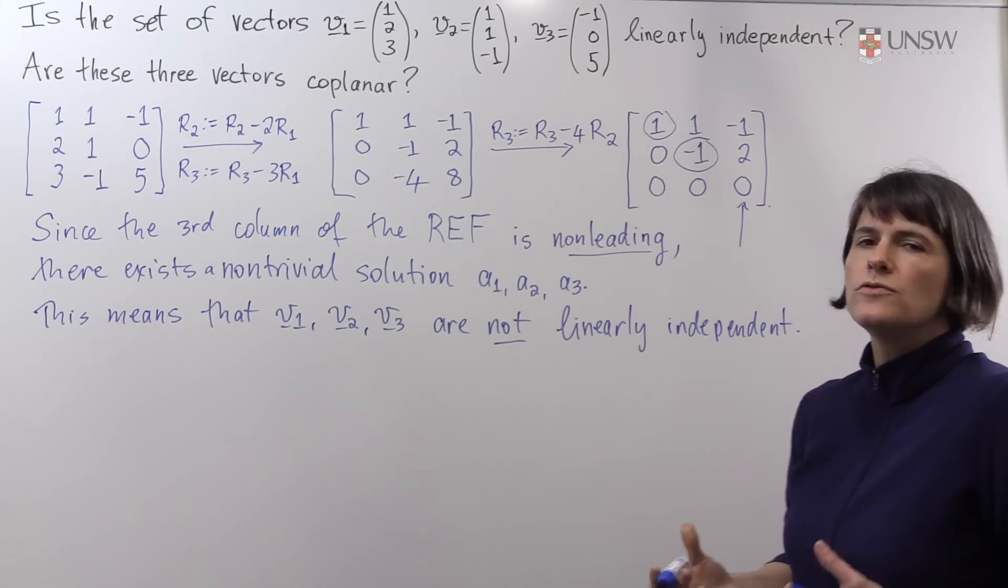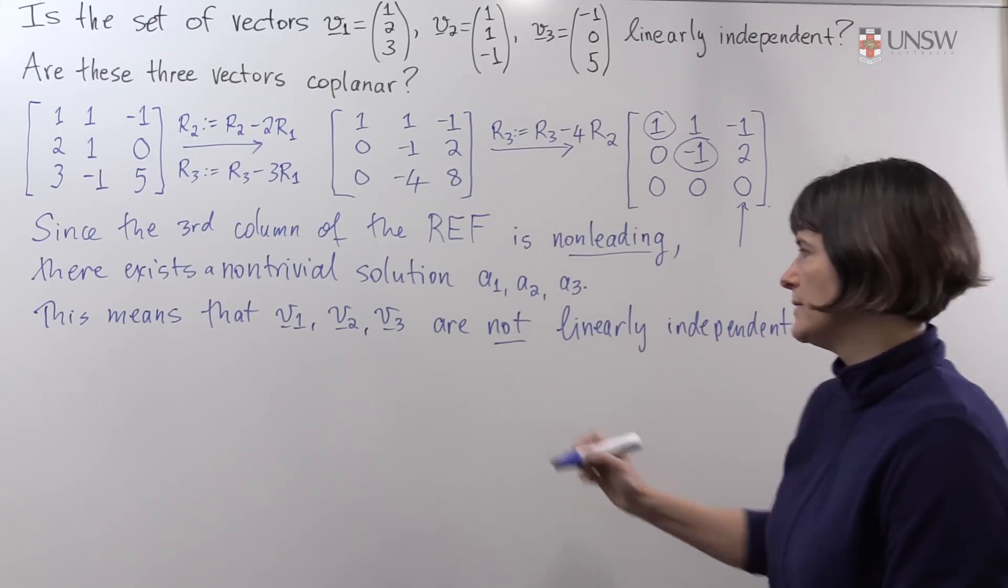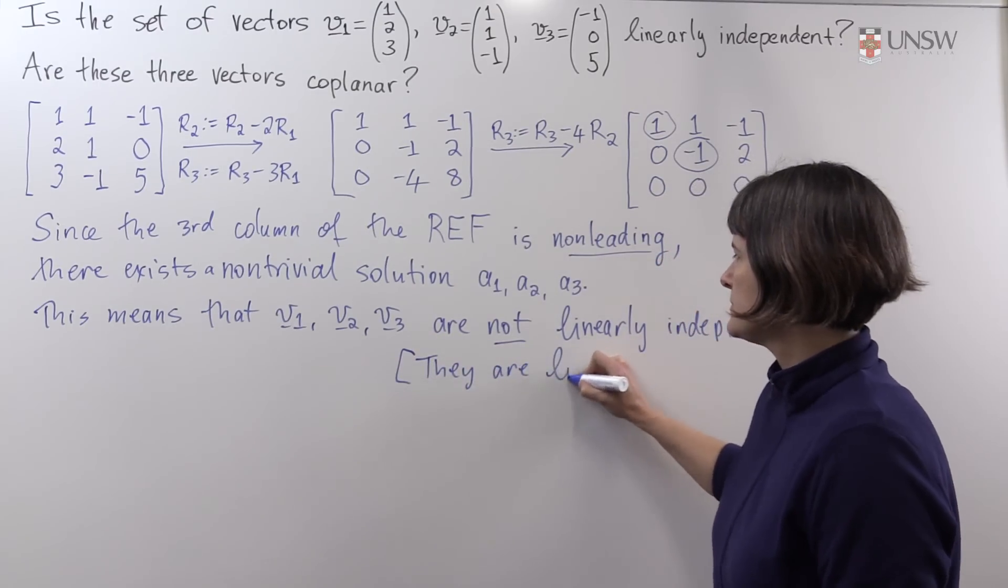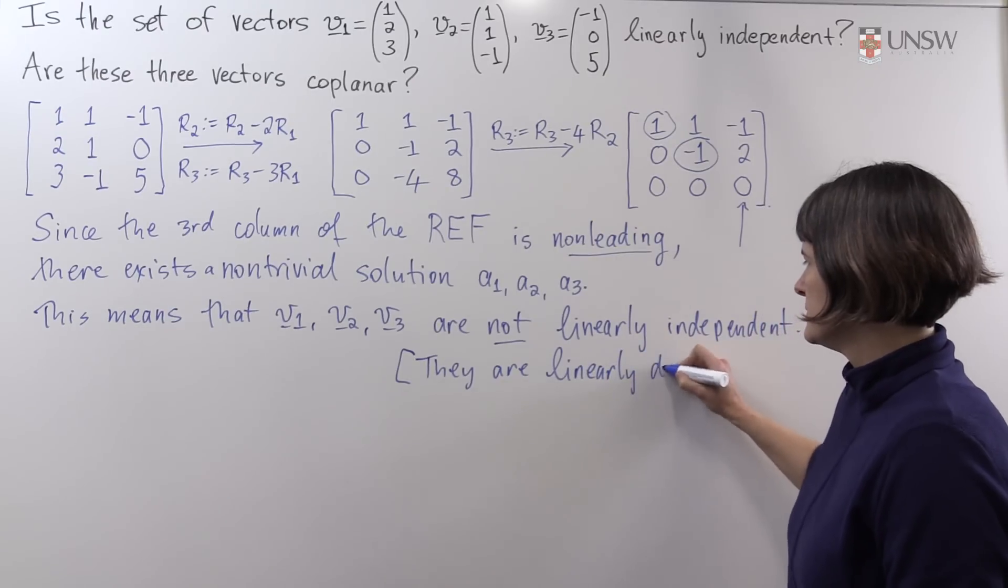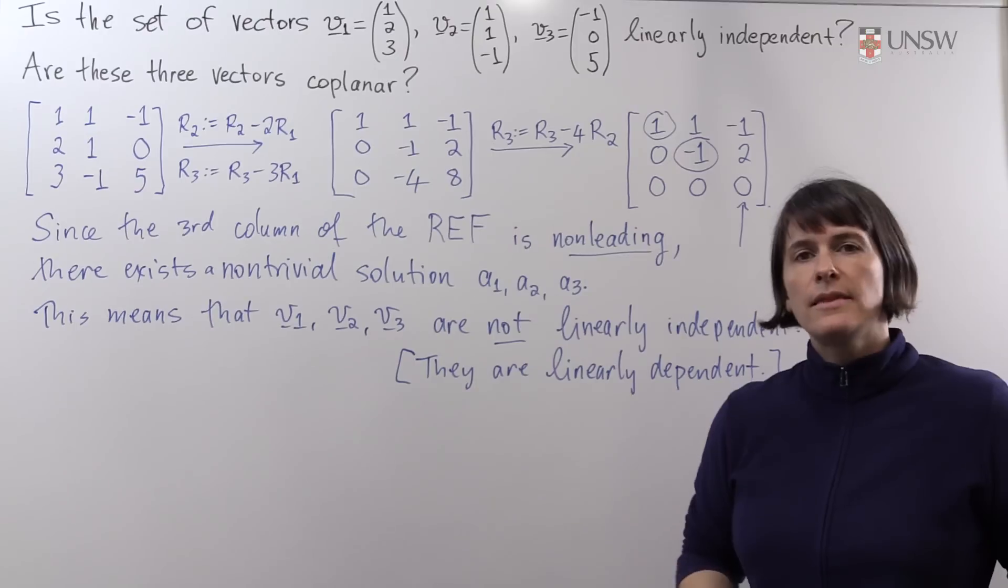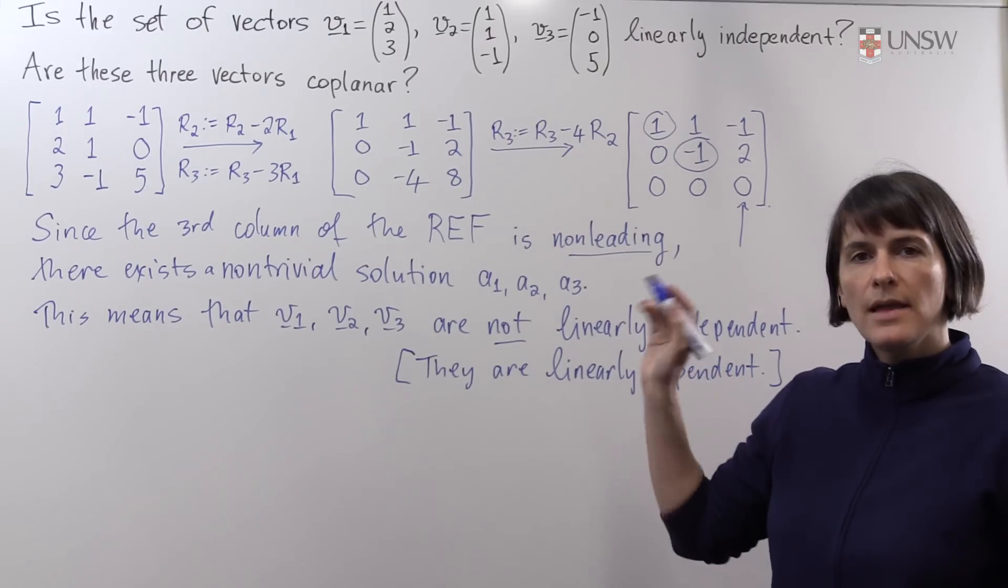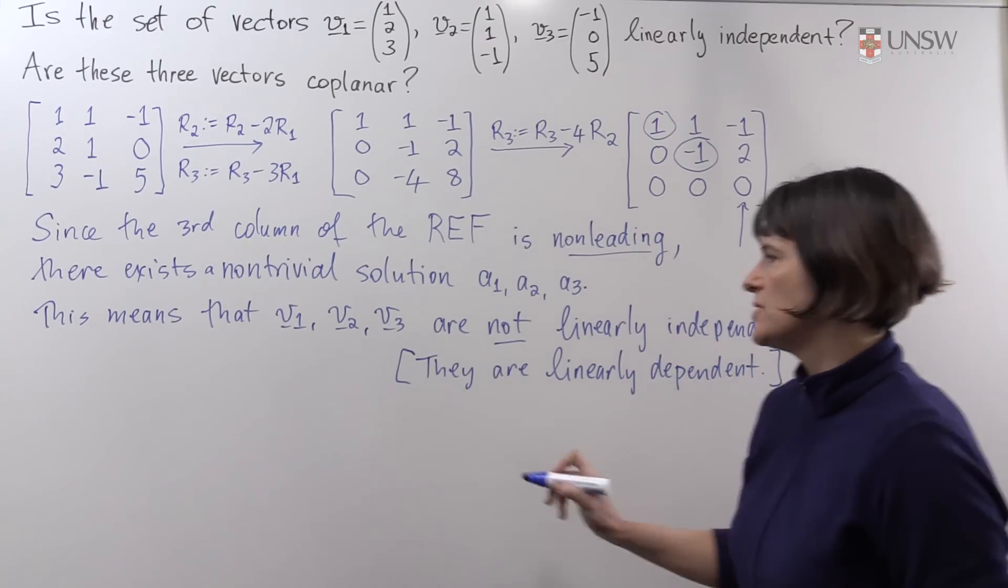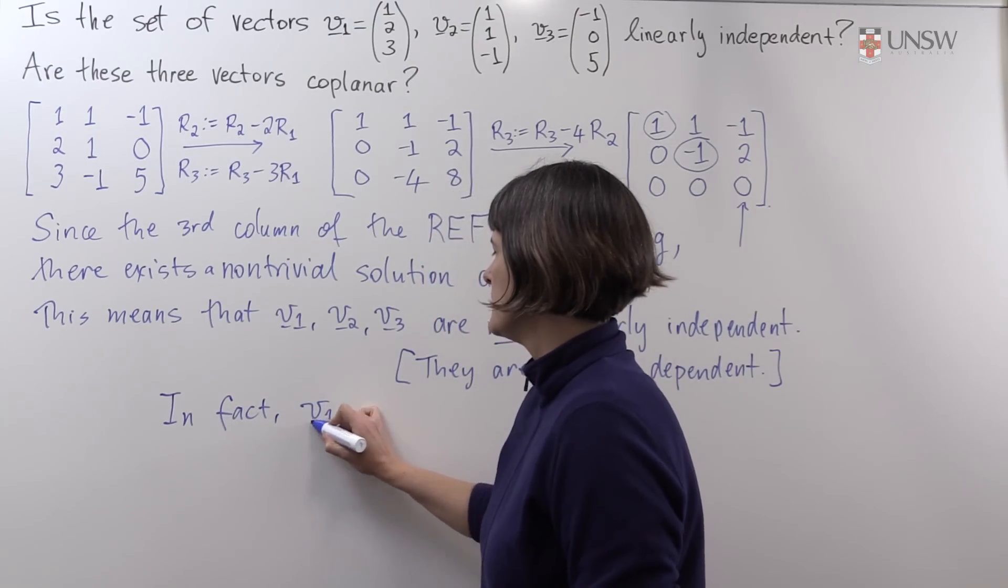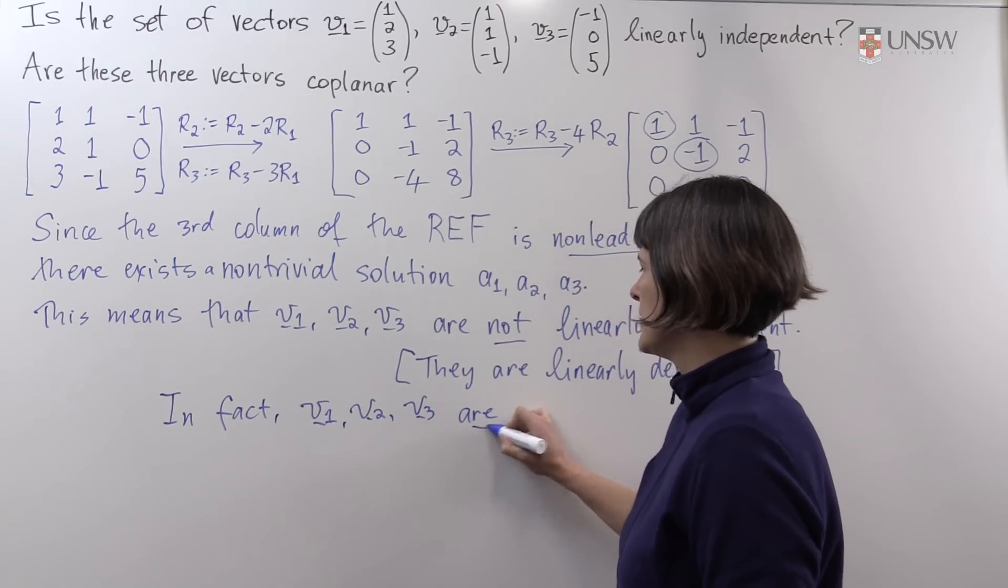All right. There is a non-trivial relation that exists between them. So they do depend on each other linearly. In fact, they're linearly dependent, which is the opposite. And what this tells us is that they do lie on the same plane. So in fact, the answer to the first question is no. The answer to the second question is yes. It's the same question. V1, V2, V3 are coplanar.